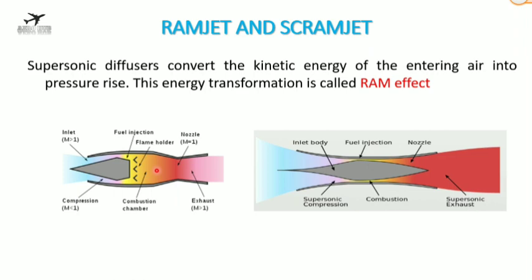Next we have ramjet and scramjet engines. These are the simplest types of all jet engines because they have no moving parts. The inlet diffusers convert the kinetic energy of the entering air into pressure energy, increasing the pressure — this energy transformation is called the ram effect. The sharp edge at the inlet acts as a diffuser, and the flow gets further compressed as shock waves are generated to compress the air.